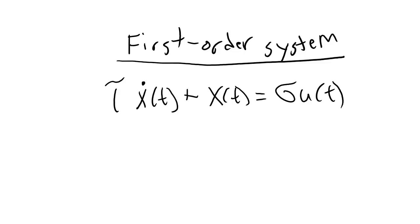A first order system equation looks like this. In this equation, x(t) is the system output signal and u(t) is the system input signal. Notice that the first time derivative of the output signal, x-dot of t, also appears in this equation, but the second derivative does not. That's why this is called a first order system. In this equation, there are two constants: tau, which is known as the time constant, and g, which is known as the system gain. If you can find values for tau and g, you would have an equation that models your first order system.